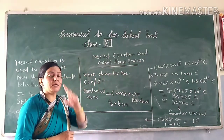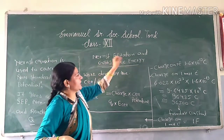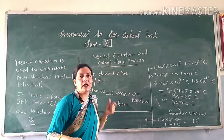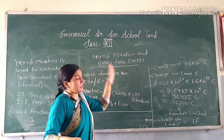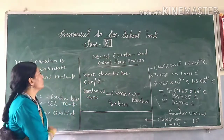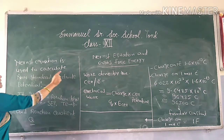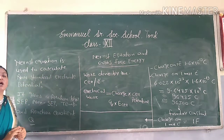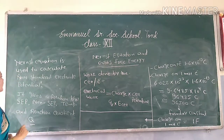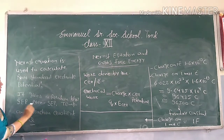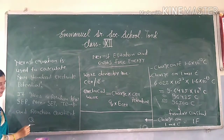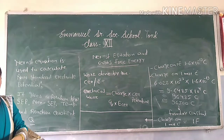For this non-standard condition, we have a very important equation which we call the Nernst equation. We will use this to measure the potential of a particular cell under non-standard conditions. First, we will go through the derivation — what is the derivation of the Nernst equation?